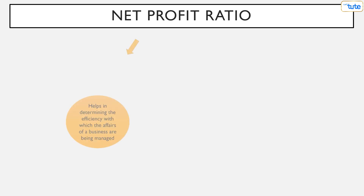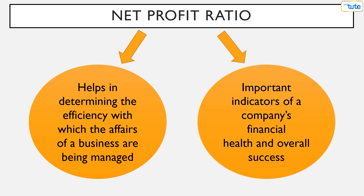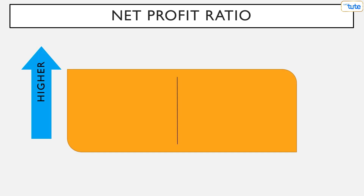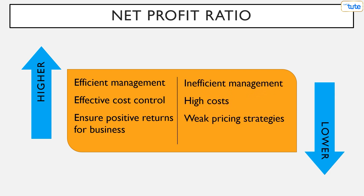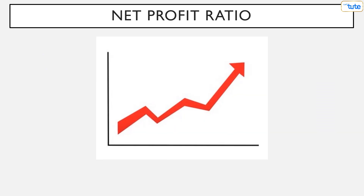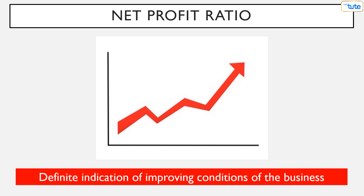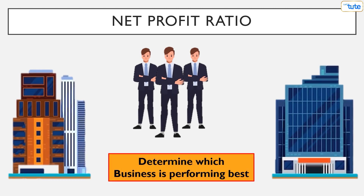The net profit ratio helps in determining the efficiency with which the affairs of a business are being managed, and is one of the important indicators of a company's financial health and overall success. A high net profit ratio indicates efficient management, effective cost control, and will ensure positive returns for the business. Whereas a low net profit ratio can result from inefficient management, high costs and weak pricing strategies. A constant increase in the net margin ratio year after year is a definite indication of improving conditions of the business. Analysts commonly compare net profit ratios of different companies to determine which business is performing best.